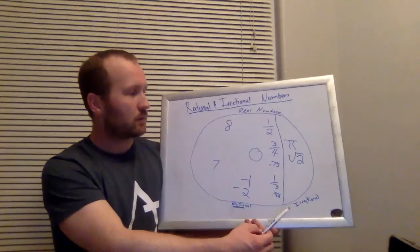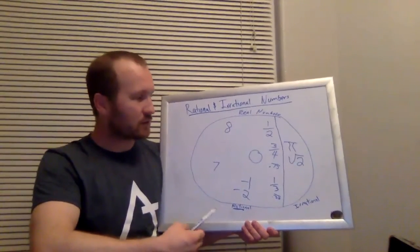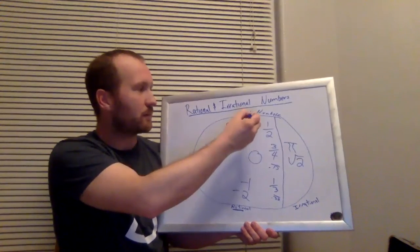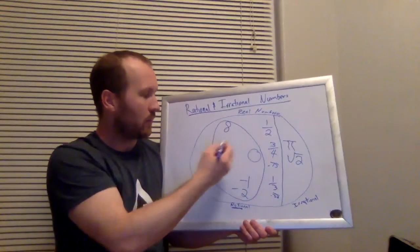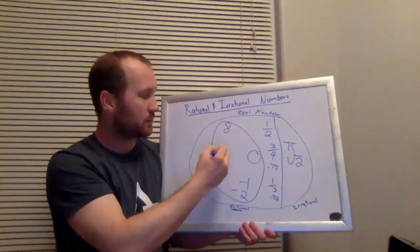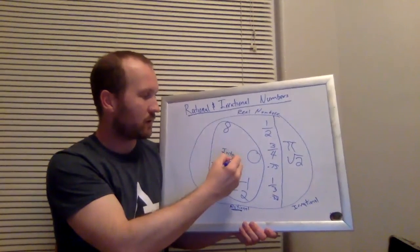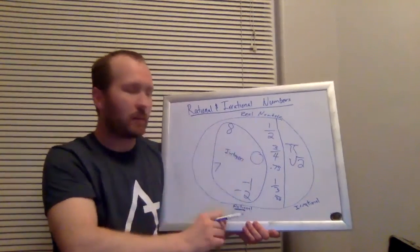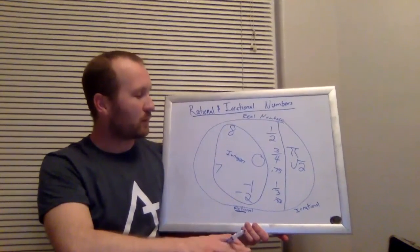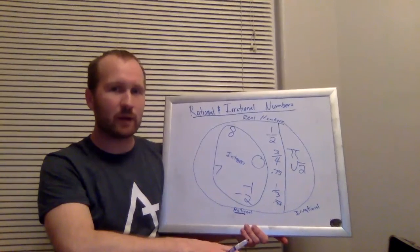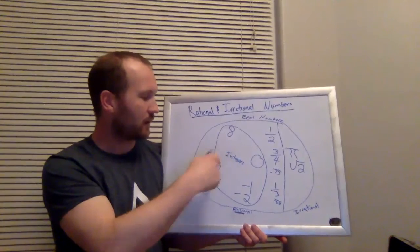Alright. So over here, within the rational numbers, we can make another division. So all these numbers, right in this circle here, we would call these integers. And integers are the numbers that are probably the most familiar to us now in Algebra 1. They're whole numbers, but they could be negative or positive, and it also includes zero.